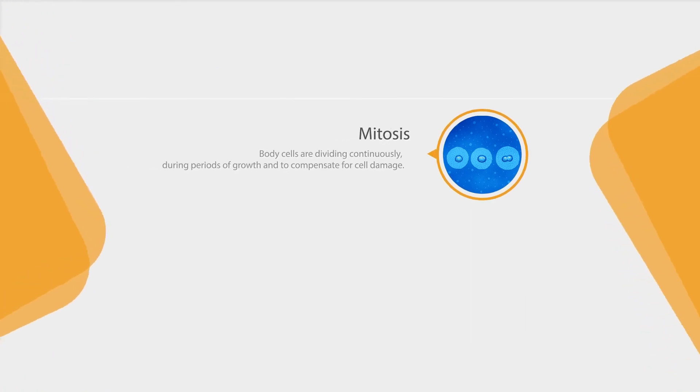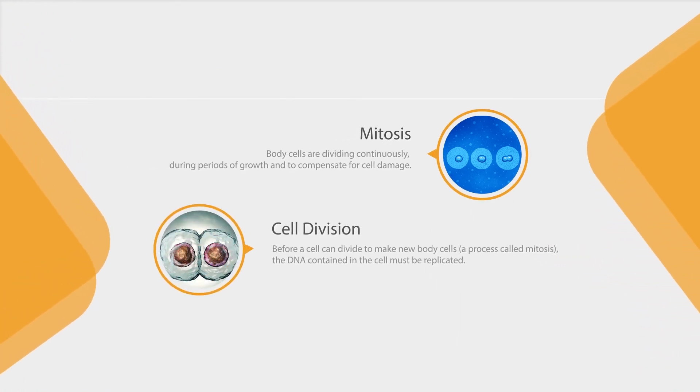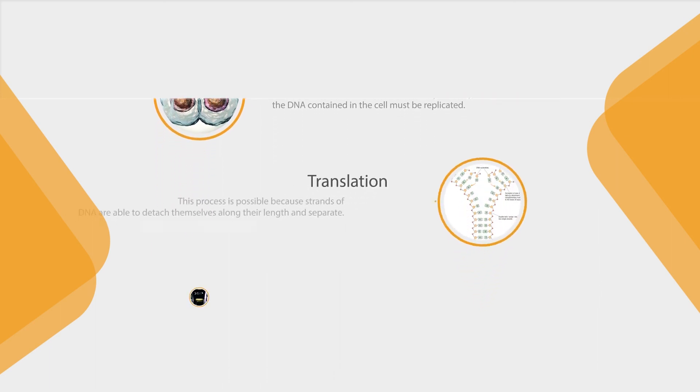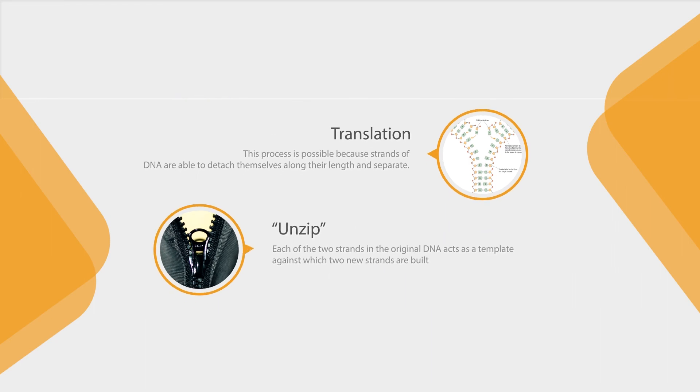Body cells are dividing continuously during periods of growth and to compensate for cell damage. Before a cell can divide to make new body cells, a process called mitosis, the DNA contained in the cell must be replicated. This process is possible because strands of DNA are able to detach themselves along their length and separate. Think of this process as unzipping your coat. Each of the two strands in the original DNA acts as a template against which two new strands are built.